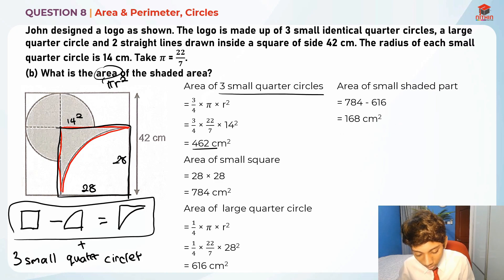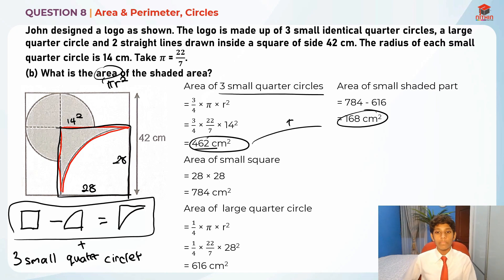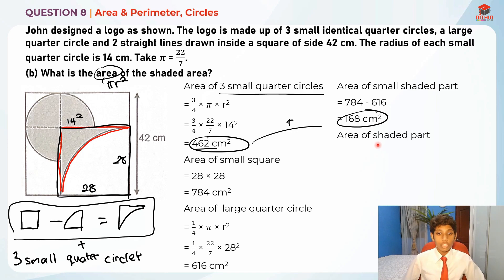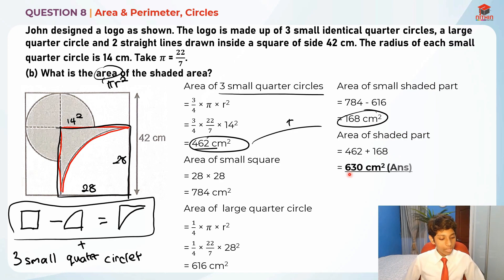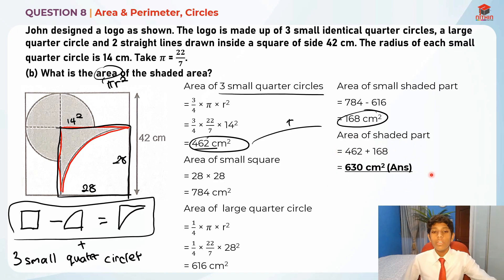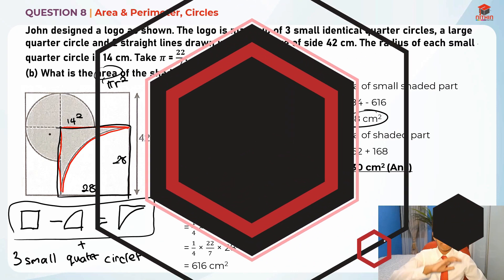Now we take the two values and add them together. Area of the shaded part = 462 + 168 = 630cm². This is the answer for Part B. With that, I've come to the end of this video. I hope you understand how to do area and perimeter circle questions. Thank you, bye-bye — I'll see you in my next video!